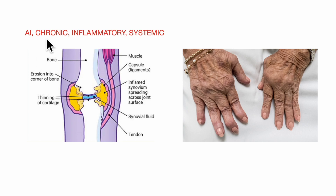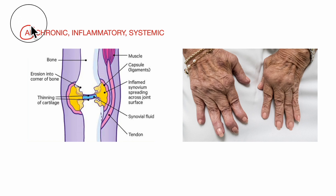To begin with, what is rheumatoid arthritis? It is basically an autoimmune condition — that is, our body's defense mechanism mistakenly attacks our own body cells.